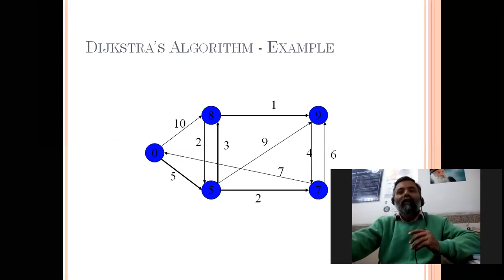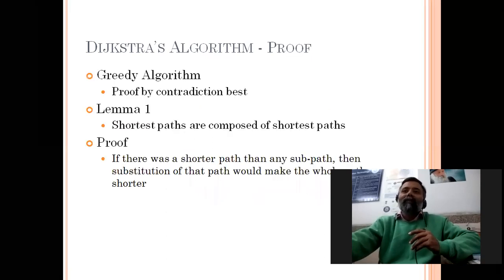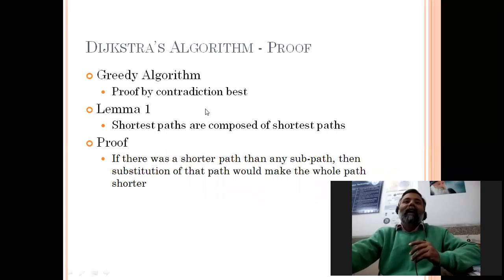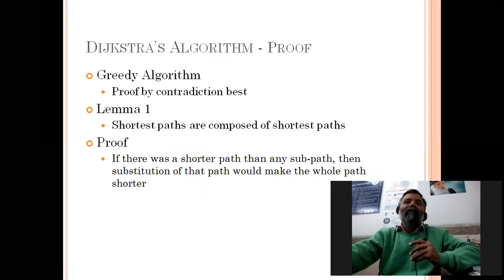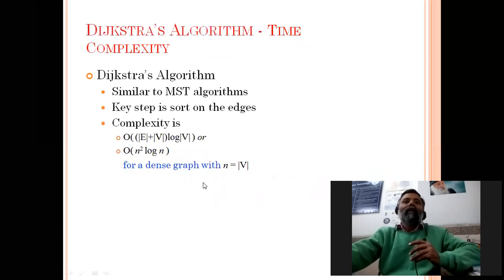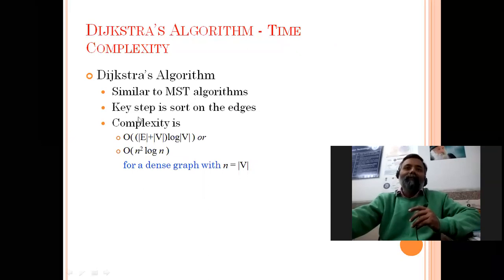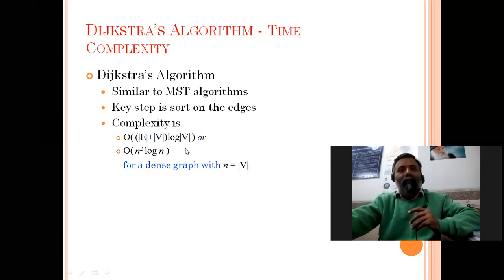Some observations: this is a greedy algorithm — in each step we select the node having the lowest distance, which leads to the shortest path. This algorithm is similar to the minimum spanning tree Prim's algorithm. The complexity is similar: O((E + V) log V), where E is the number of edges and V the number of vertices. In the next lecture, we will discuss all-pairs shortest path, which is the Floyd-Warshall algorithm.